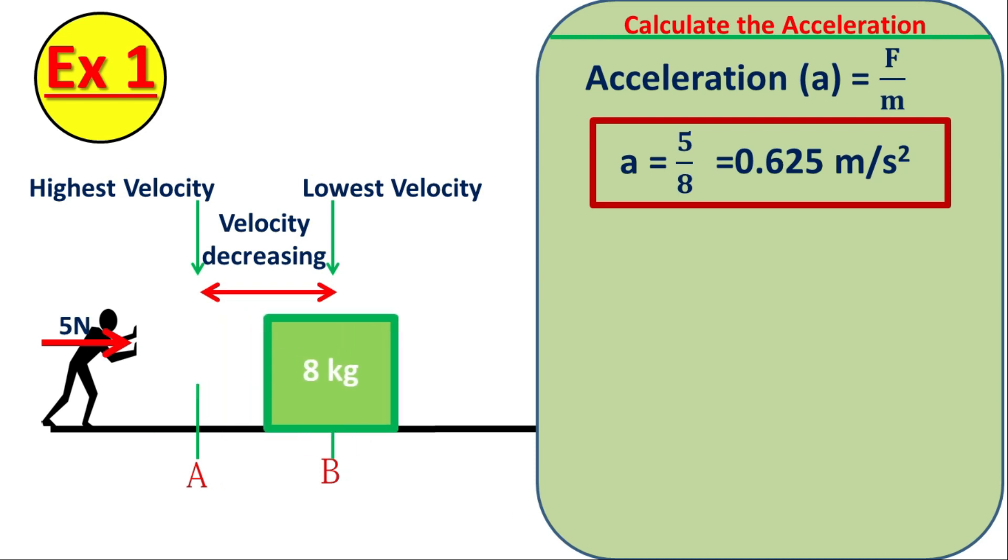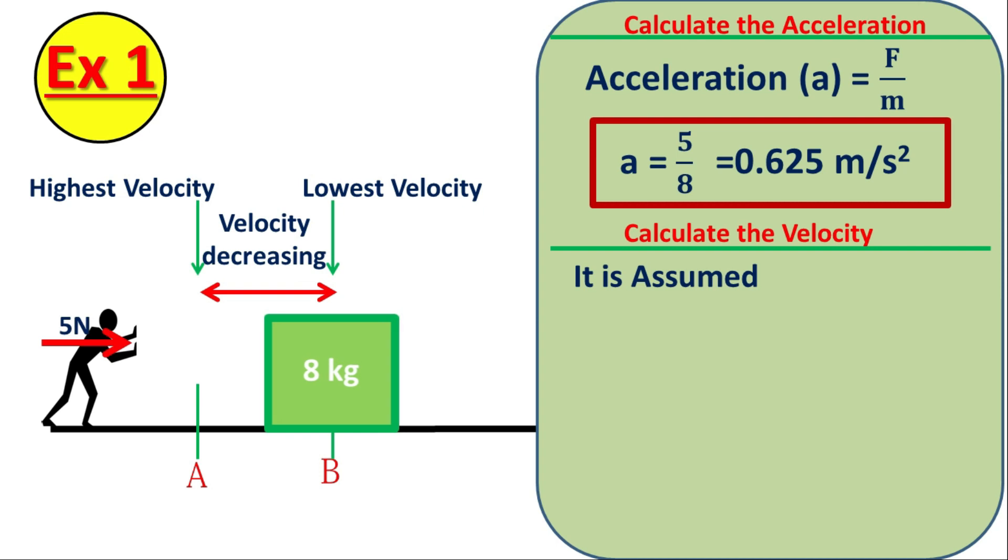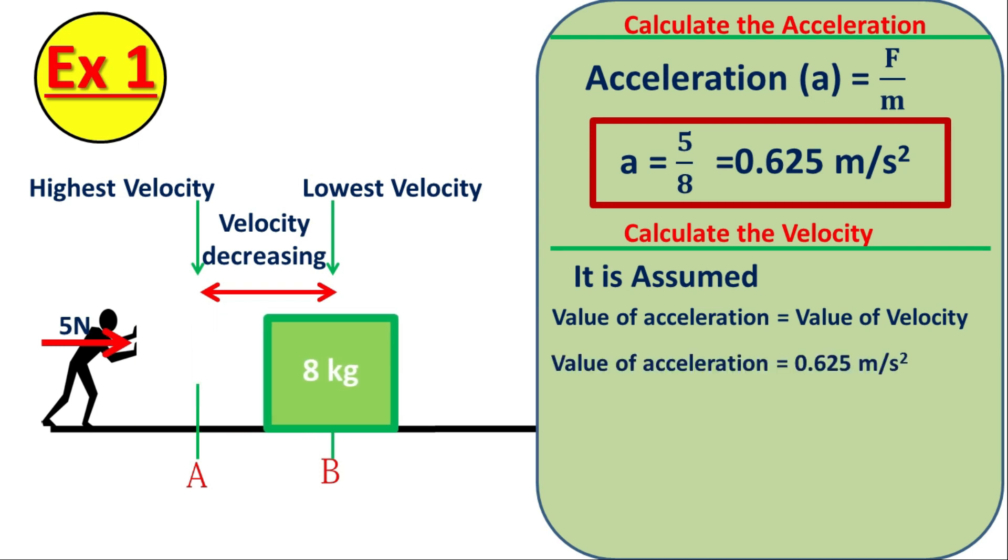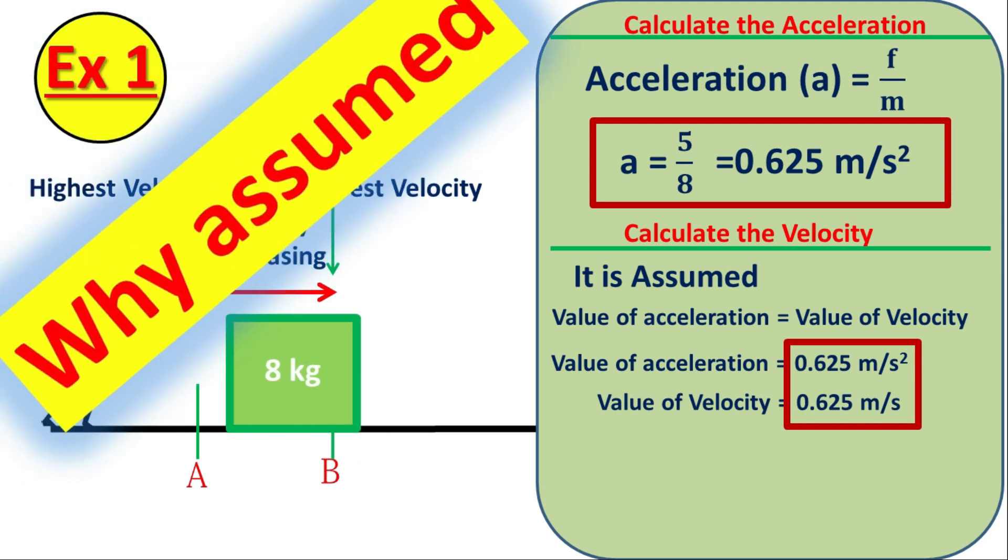In this example, we calculated the acceleration. That is 0.625 meter per second square. Now let's calculate velocity. But the calculation of velocity is not calculated anywhere using science formula. But they assume. Why do they assume without using formula? In the present scenario, the value of velocity is assumed same as the value of acceleration. That means in this case, the value of object's acceleration is 0.625 meter per second square. So the value of velocity will also be 0.625 meter per second. But how and why? No explanation.